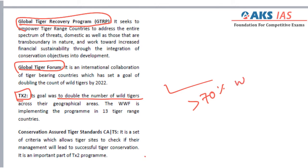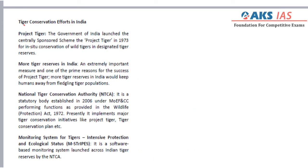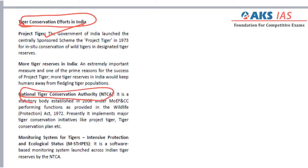Tiger conservation efforts in India are detailed in the material, including Project Tiger, the National Tiger Conservation Authority, monitoring systems for tigers known as M-STrIPES, and all other initiatives which are important from the prelims perspective.